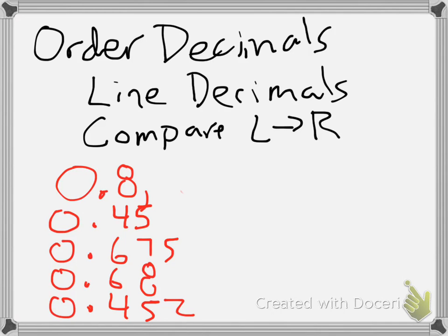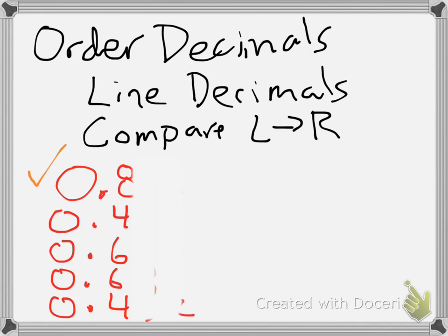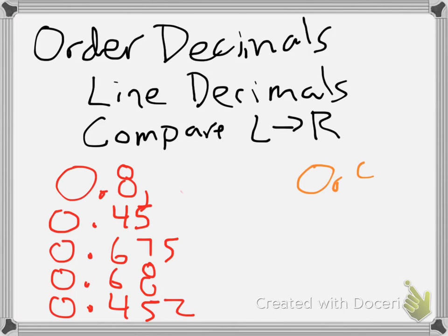So now I'm going to move a little bit farther to the right and cover up everything but my next digits. I see that I have 8, 4, 6, 6, 4. Well, I know that 8 is the largest number. If I was asked to put these in order from greatest to least, I would take that number and place it. So I write down 0.8 — making sure to write the entire number — and then mark it off.